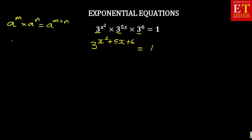So, because we are given a 3 here, if I can say 3 to the power of 0, I will get 1. So, in actual fact, what it means is I can express — and this is the trick that they always bring — you need to express that exponent x squared plus 5x plus 6.